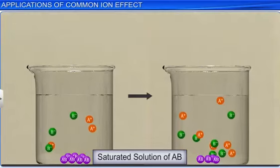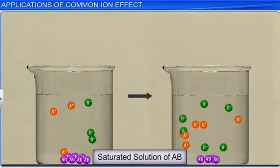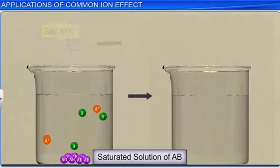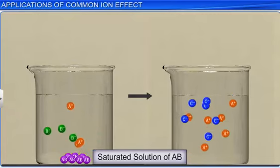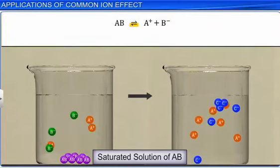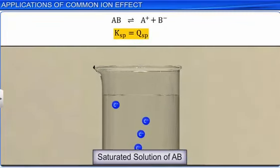On the other hand, if the concentration of any one of the ions is increased by adding an electrolyte, then the equilibrium shifts towards the left, according to Le Chatelier's principle, till Ksp becomes equal to Qsp.